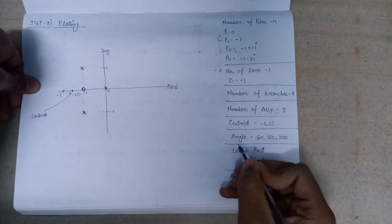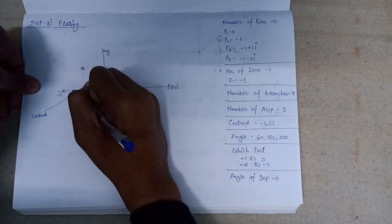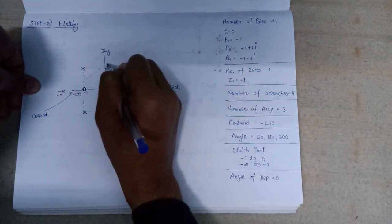And the angle made by asymptote is equal to 60, 180, and 300. So this is the 60 degree angle, this is 180 degree angle, and this is 300 degree.